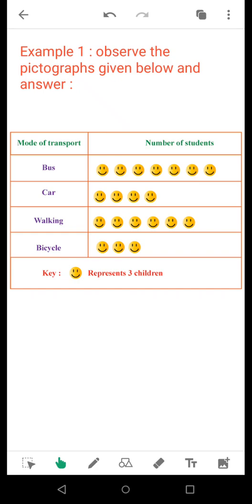Six multiplied by three means 18 students used the mode of walking as their preferred choice. And the fourth choice is bicycle. Three multiplied by three, that means nine students used bicycle as the mode of transport.